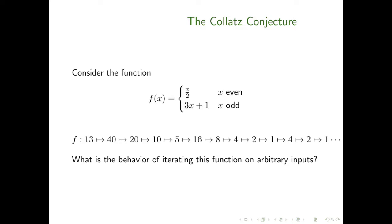Another way of looking at this function is that it takes in an input and multiplies it by one-half if it can — that is, if that will keep it a natural number — and if not, multiplies by 3 and adds 1.